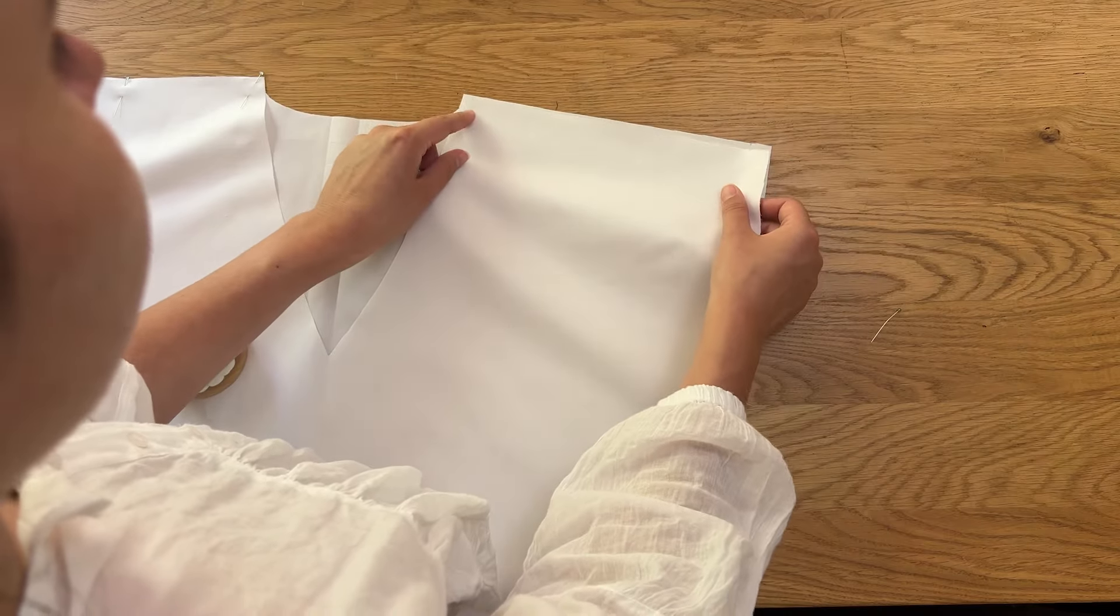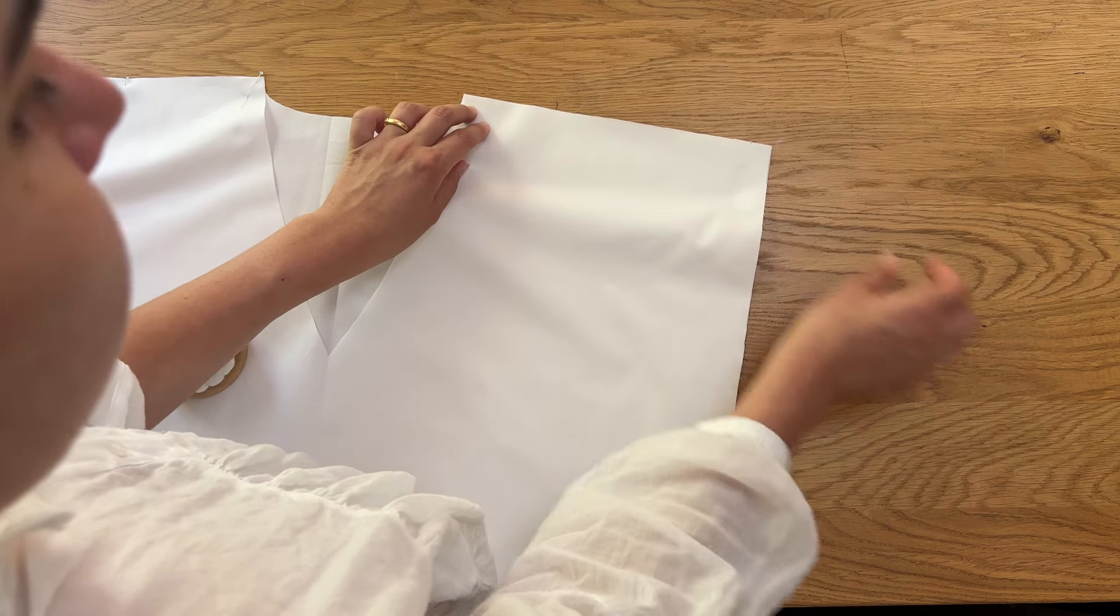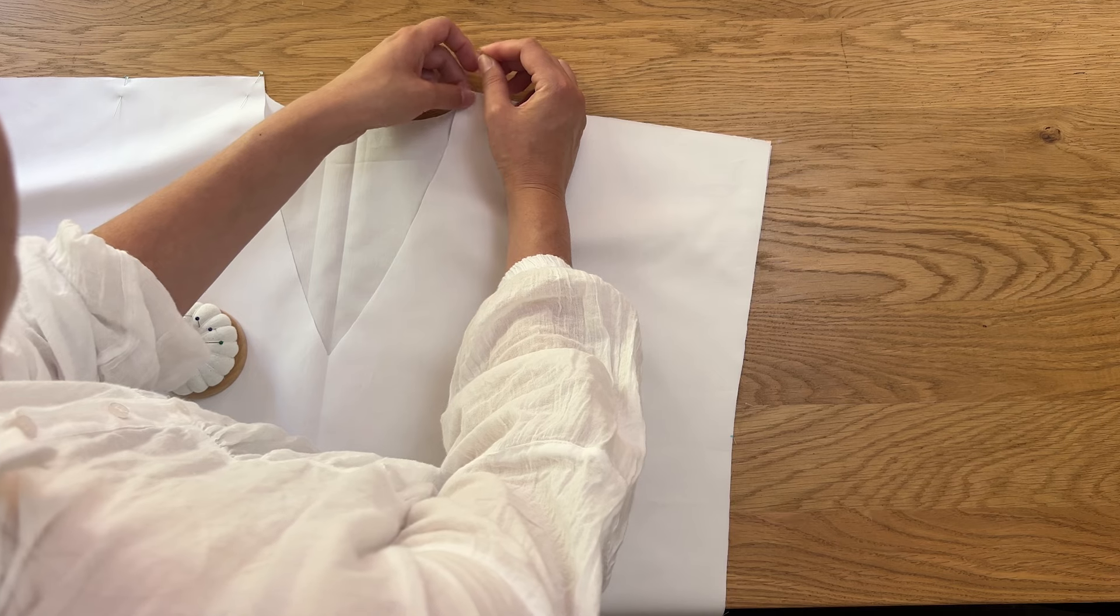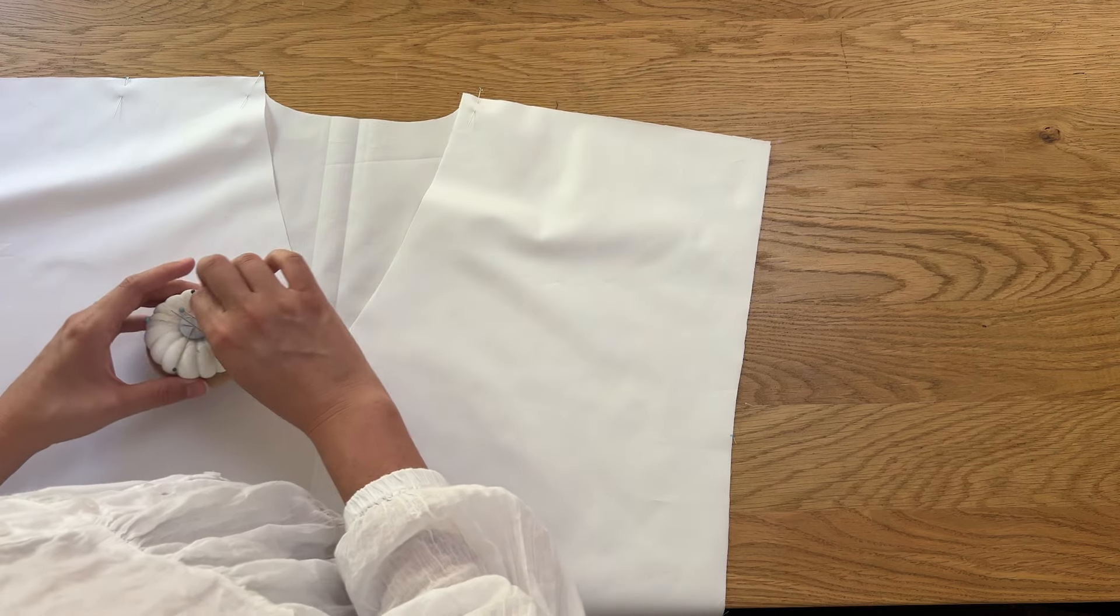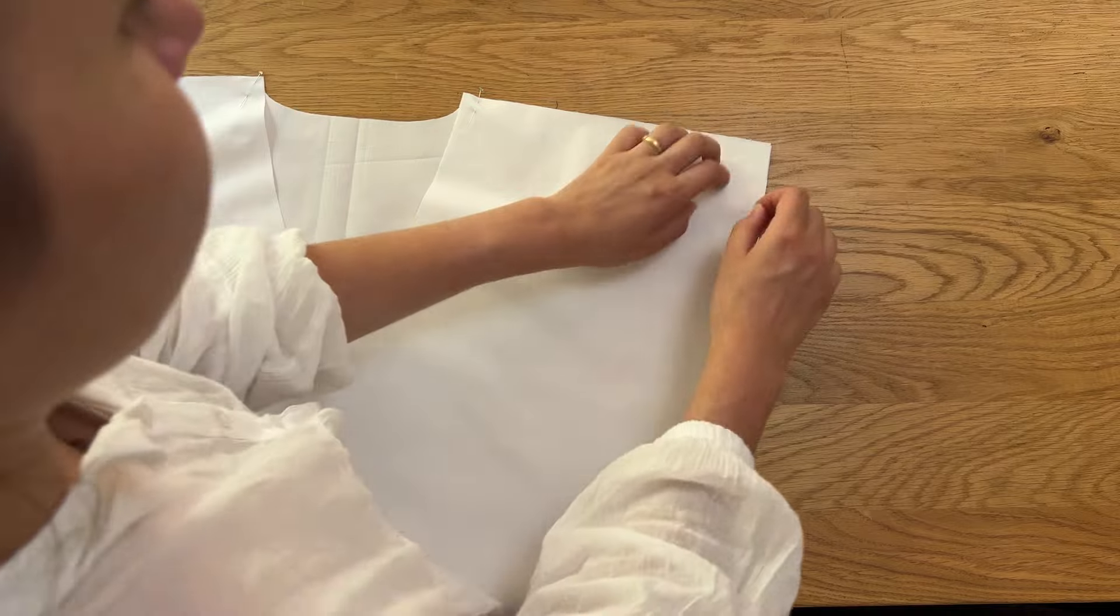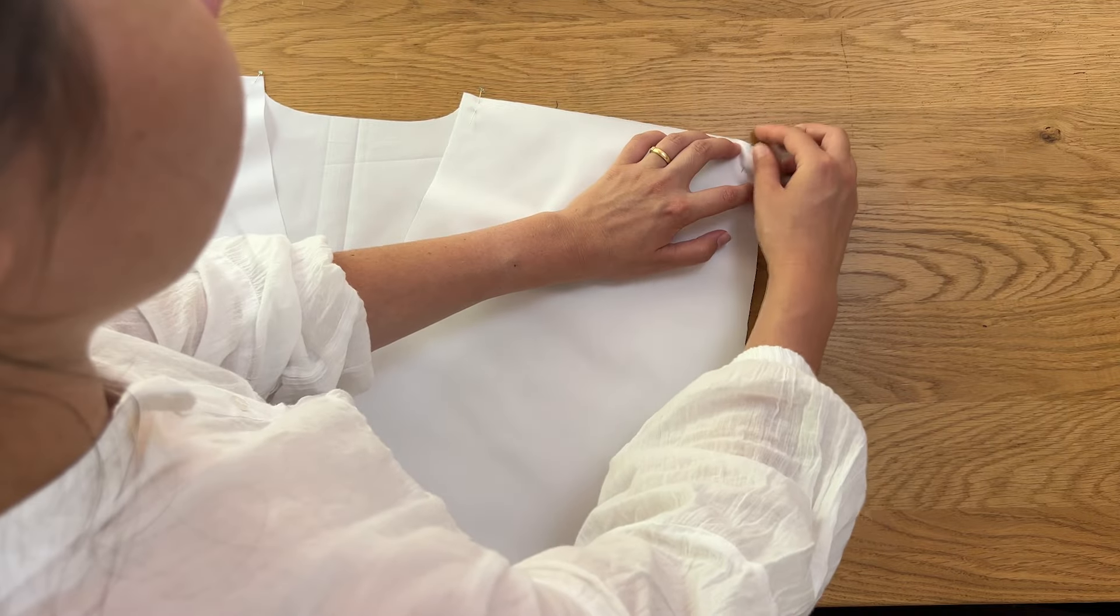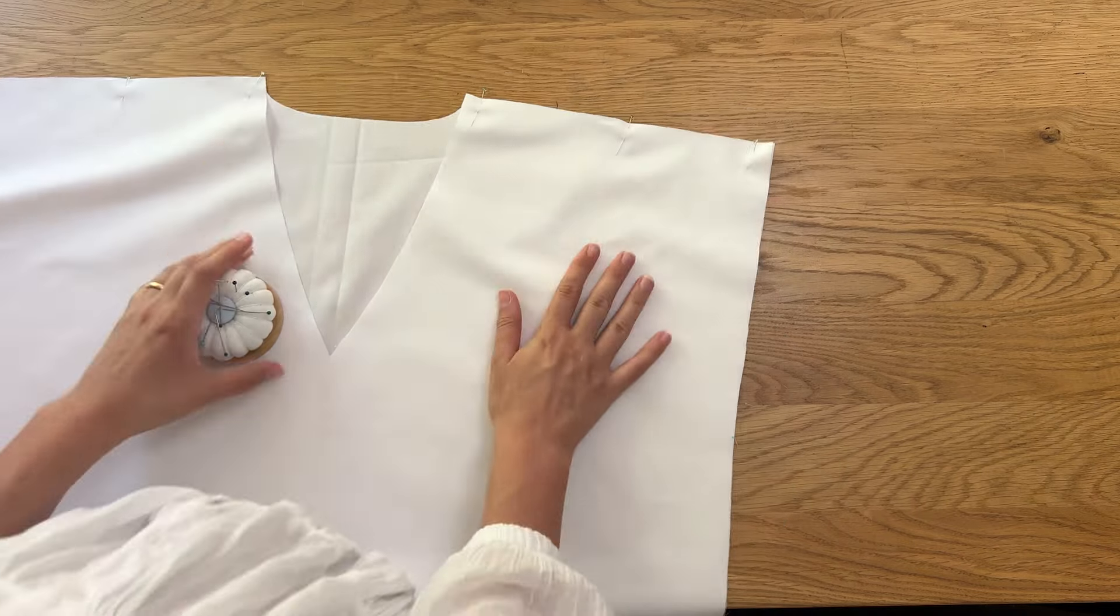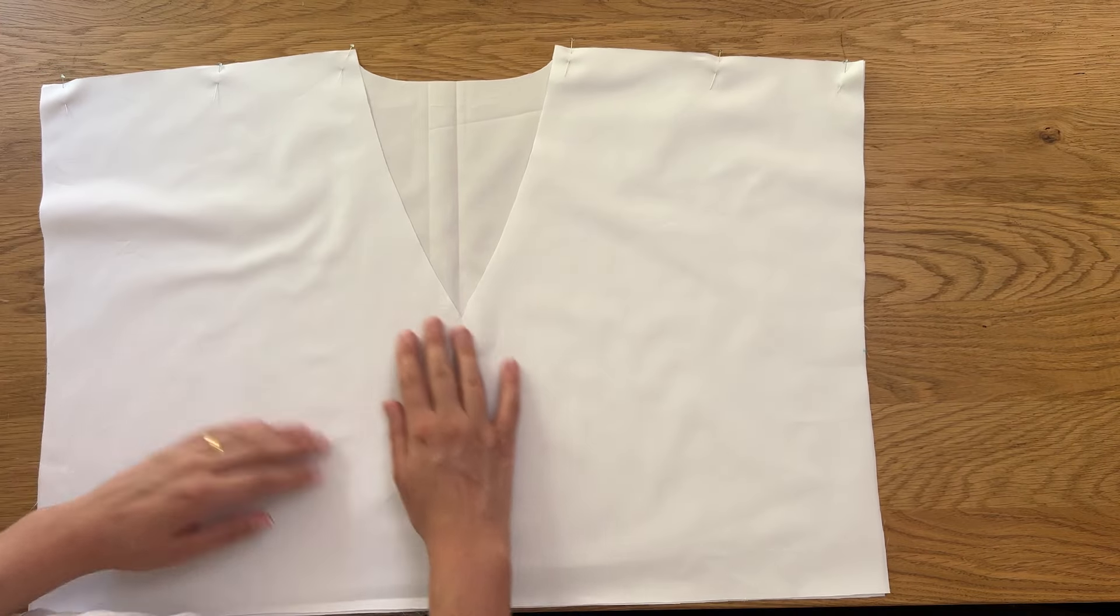Place the front and back shoulder seams together and pin. I decided to do French seams on this dress but you can also do regular seams with overlocking too. Sew with a one centimeter seam allowance.